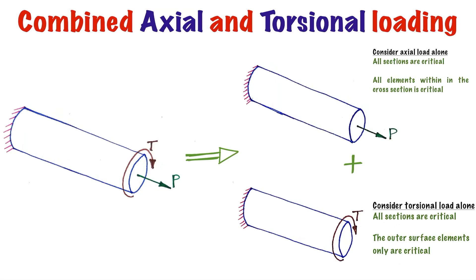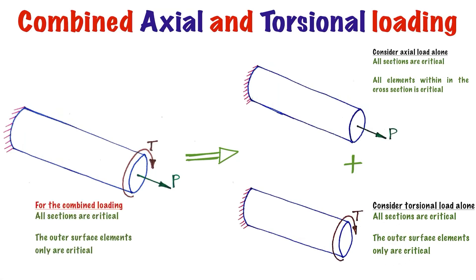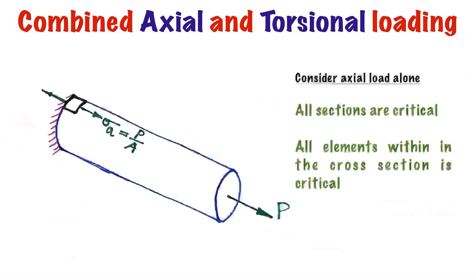Next we look for the critical elements within the selected critical section. For axial load alone, all elements within the critical section are critical, but for torsional load alone, only the outer surface elements are critical. We select the outer surface condition as it is common to both criteria. So for the combined axial and torsional loading, all sections are critical and only the outer surface elements are critical. Based on these two criteria we draw an element on the member and mark the state of stress for that element.